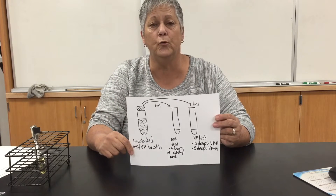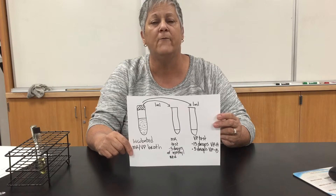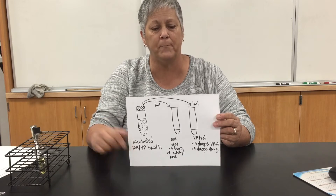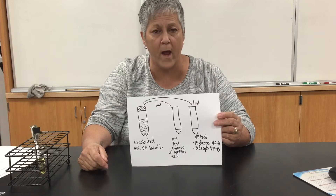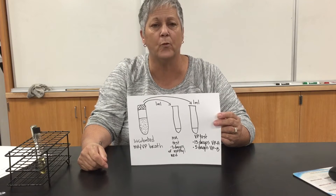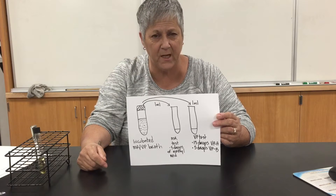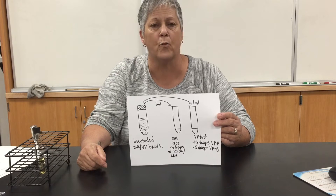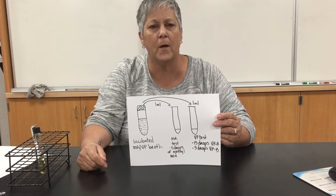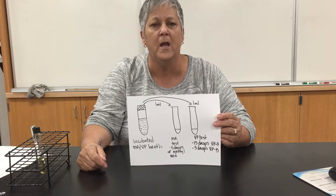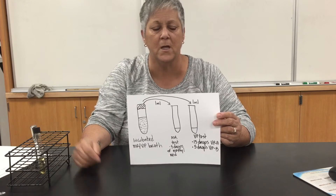To run the MR test, you will add five drops of methyl red to that tube. Methyl red is a pH indicator that is red under acidic conditions. If it remains red after adding, that's a positive test.